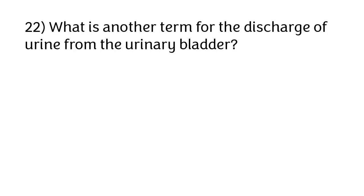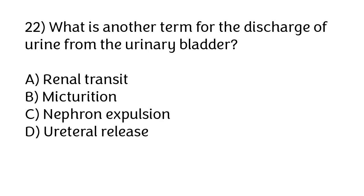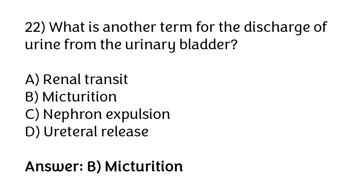What is another term for the discharge of urine from the urinary bladder? Options: renal transit, micturition, nephron explosion, urethral release. The correct answer is option B — micturition is another term for the discharge of urine from the urinary bladder.